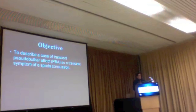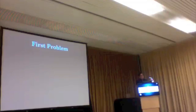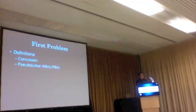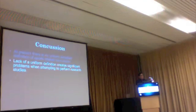The objective is to describe a case of transient pseudobulbar affect as a transient symptom of a sports concussion. The first problem is about definitions — both of concussion, and then we'll get into pseudobulbar affect. In terms of concussion, there is no uniform accepted definition of sports-related concussion, which is very surprising to a lot of people. This lack of uniform definition creates significant problems when trying to do research or coding from an epidemiological point of view.